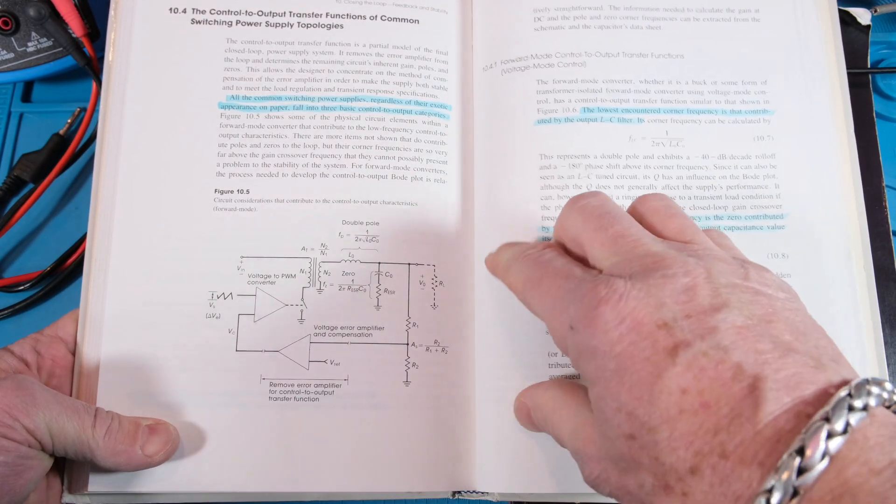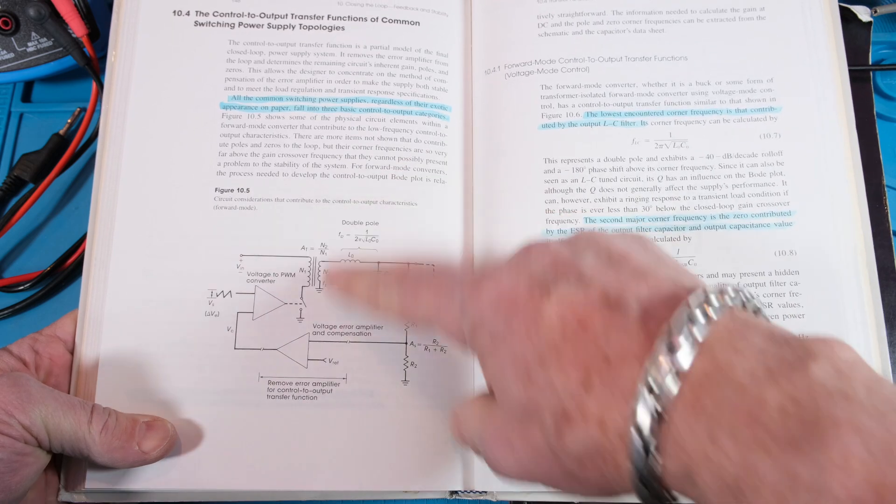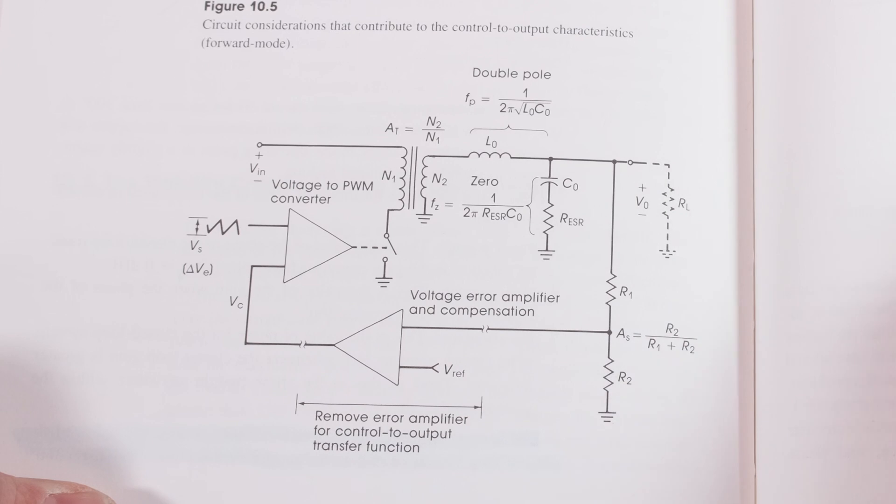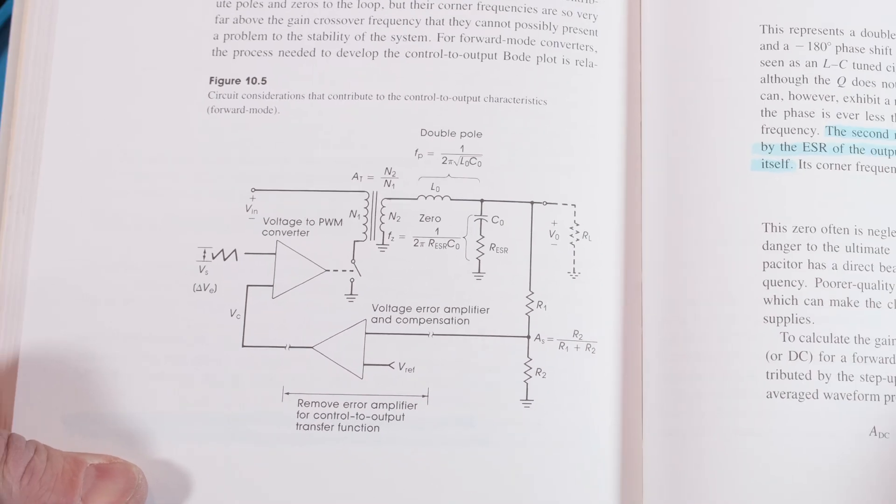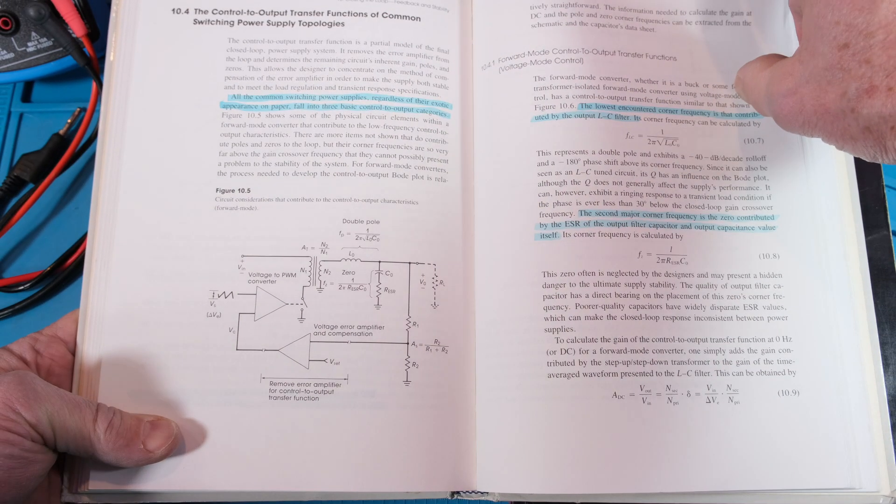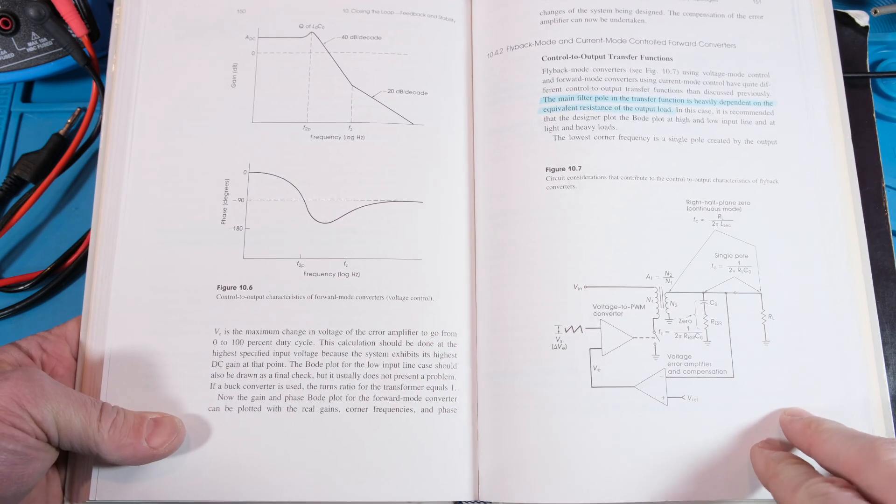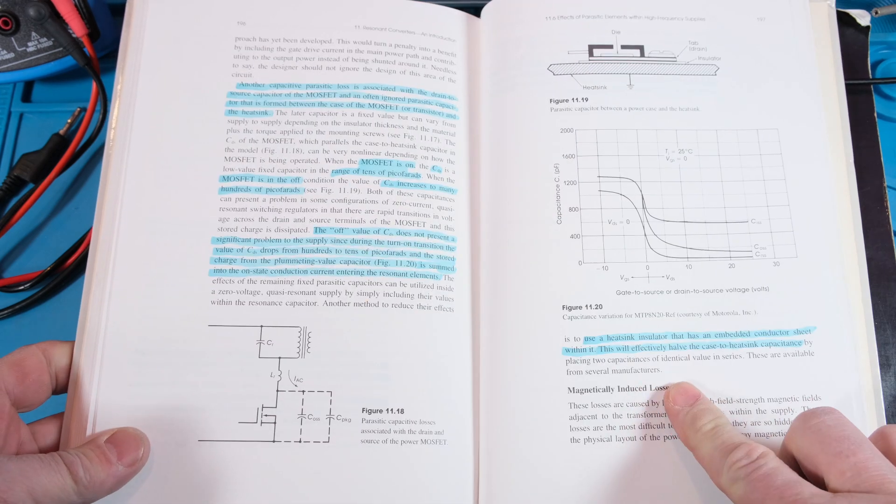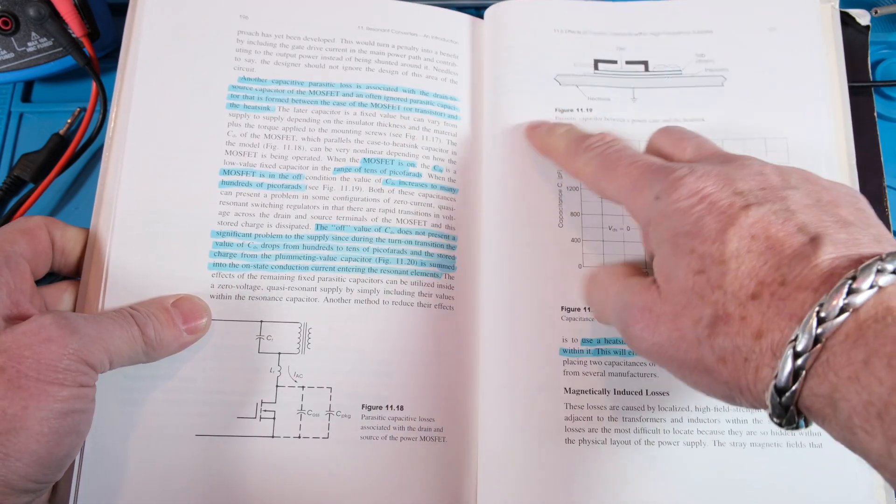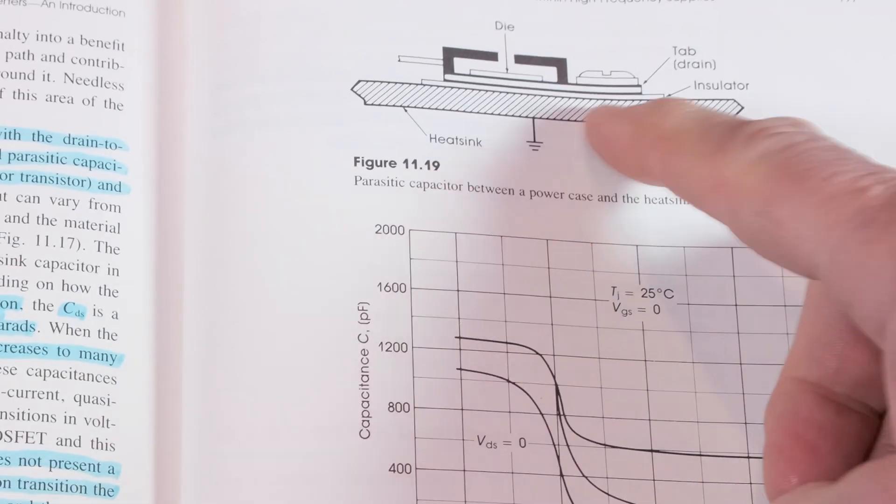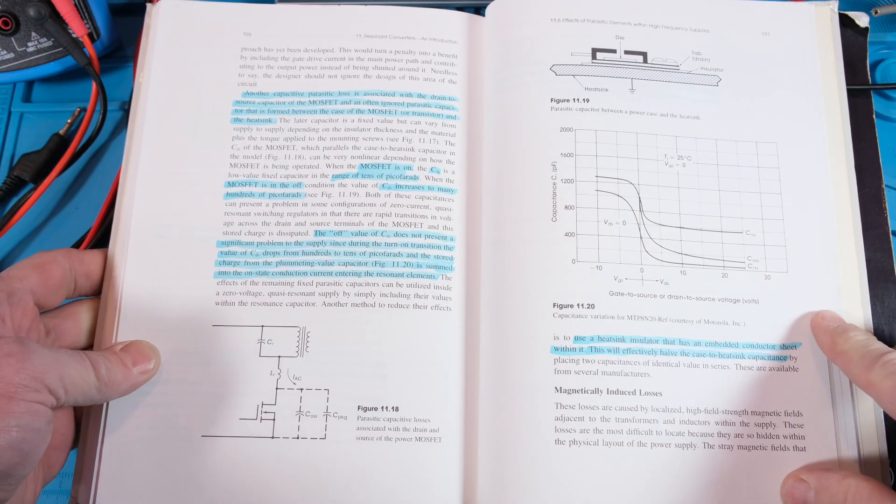So then when he gets into the feedback stability, he breaks it down, shows you where the poles and zeros come from, the things you have to watch for and the equations. He just breaks it down really in a basic, easy to understand way to digest. And he also goes into some parasitics and how to get rid of heat, talks about the heat sink, showing the diagrams here.